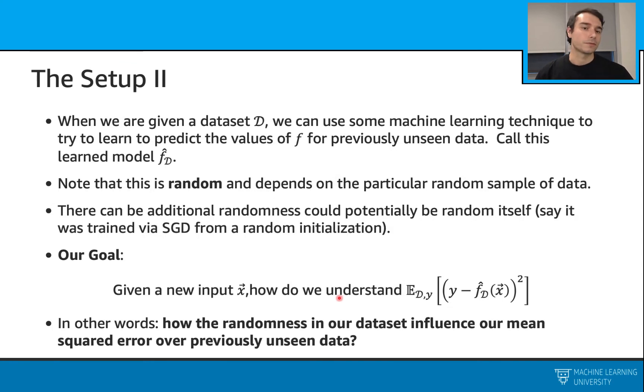So let's go on. Here we are looking at the random process. Here, for example, we can have lots of datasets randomly, and we can train models on these datasets. The trained models are called f_hat_D, and we can use these models to make some predictions. We can also have some additional randomness. For example, if we were to use stochastic gradient descent to train these models, that would be an additional randomness. But our overall goal is to understand our error for some new input x. So this is some unseen data.